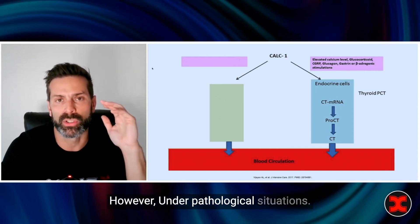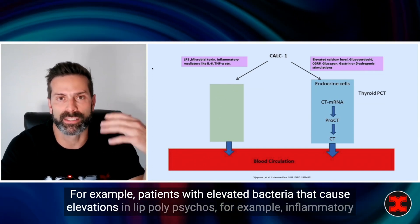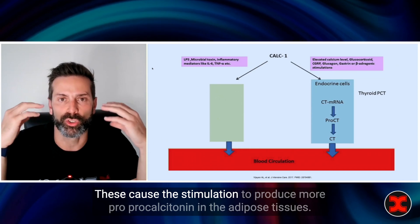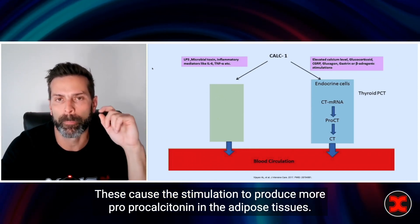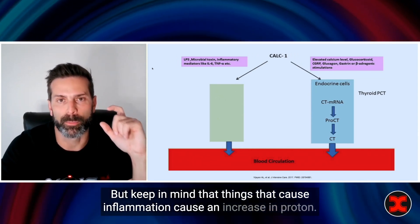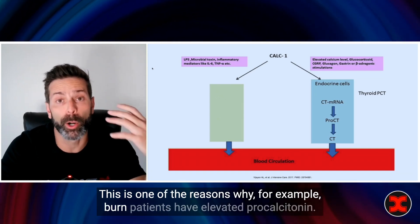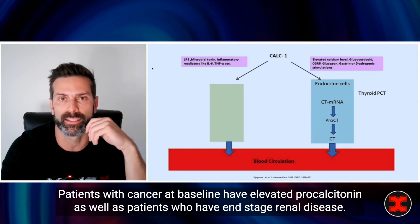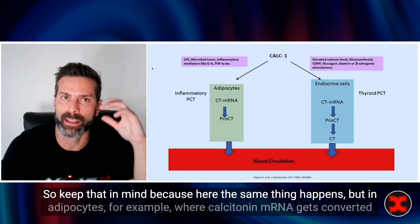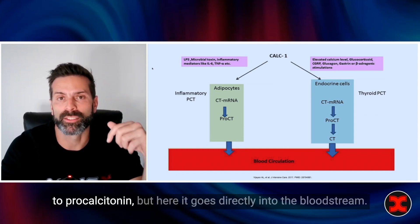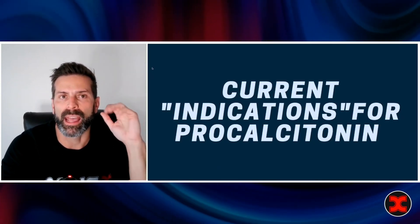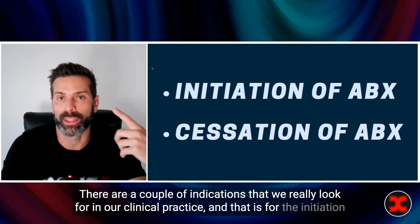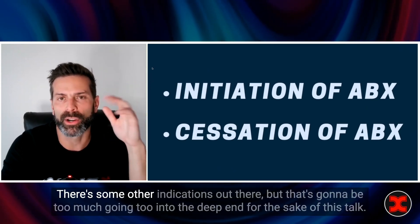However, under pathological situations — for example, patients with elevated bacteria causing elevations in lipopolysaccharides, or inflammatory mediators such as interleukin-6 and tumor necrosis factor alpha — these stimulate production of more procalcitonin in the adipose tissues. Keep in mind that things that cause inflammation cause an increase in procalcitonin. This is one reason why burn patients have elevated procalcitonins, patients with cancer at baseline have elevated procalcitonins, as well as patients with end-stage renal disease. In adipocytes, calcitonin mRNA gets converted to procalcitonin, but here it goes directly into the bloodstream. With this biomarker, there are two main indications in clinical practice: initiation of antibiotics and cessation of antibiotics.